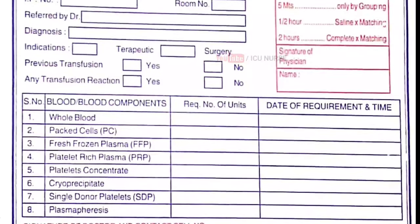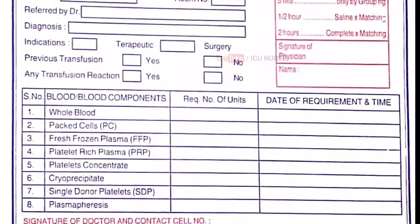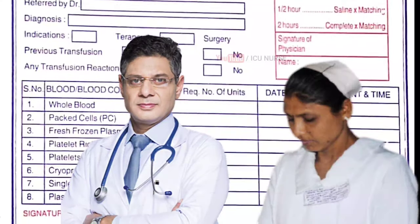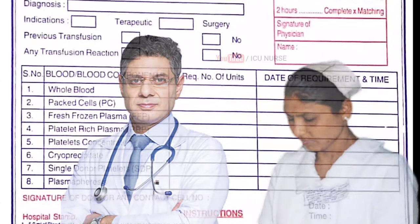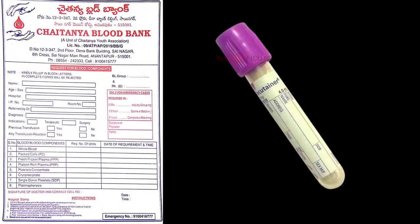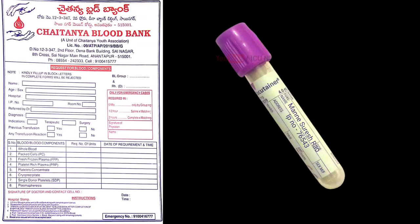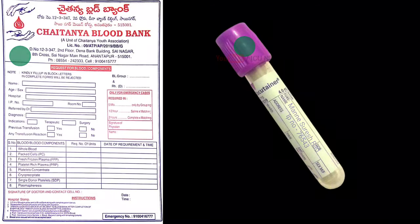Before sending the requisition form to the blood bank, get it double checked by a doctor and a senior nurse and get their signatures on the requisition. Double checking will avoid any mistakes. Make sure that the EDTA sample that you are sending is labelled properly. If the patient is positive for any virals like HBSAG, HIV, etc., do not forget to label the requisition and the vacutainer with a color-coded sticker indicating the diagnosis.